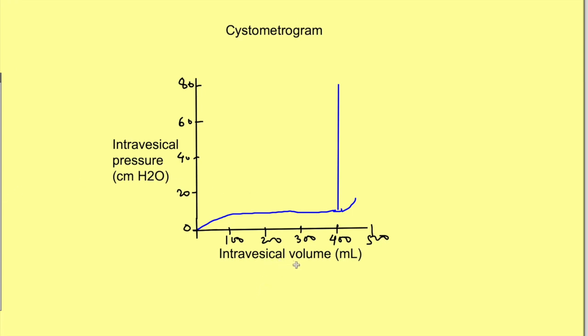In this graph, the x-axis shows intravesical volume in mL and the y-axis shows intravesical pressure in centimeters of water. As the urine starts filling in the urinary bladder, which is depicted by increase in this volume, the pressure in the bladder rises a bit.